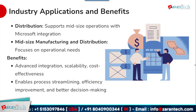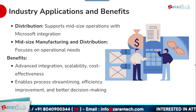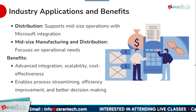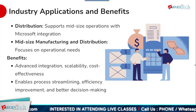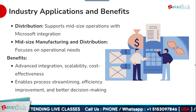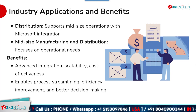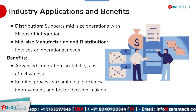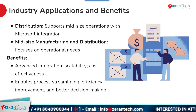Looking at specific industry examples, in the distribution space SAP S/4HANA Public Cloud supports the operational needs of mid-sized companies, with Microsoft integration enabling them to leverage existing investments. For mid-sized manufacturing and distribution businesses, the pre-configured processes allow rapid adoption of leading practices. Key benefits these industries are seeing include advanced integration that breaks down silos, improved scalability to support growth, cost-effectiveness compared to on-premise solutions, and better-informed decision making.